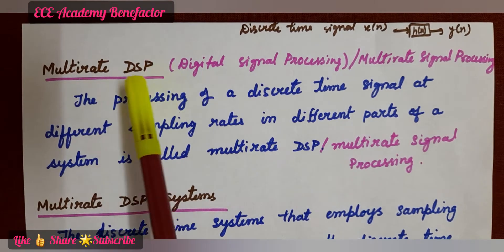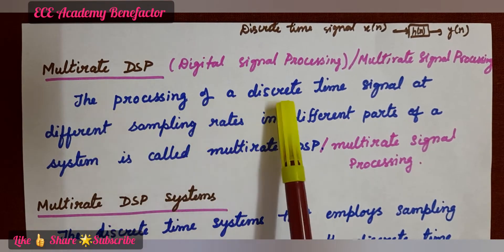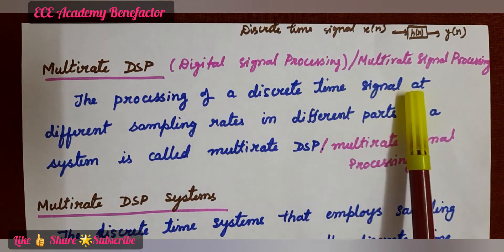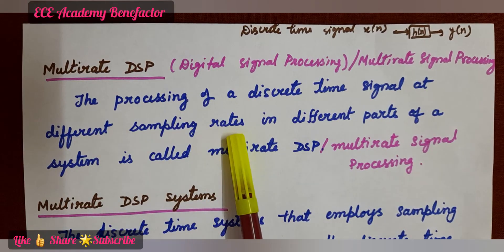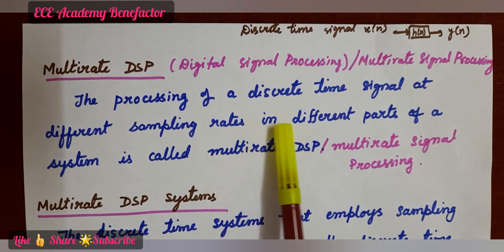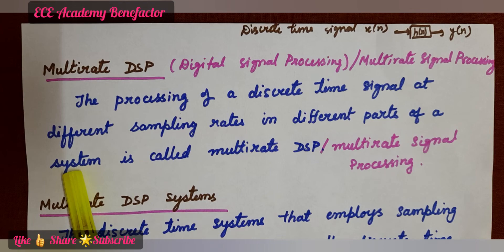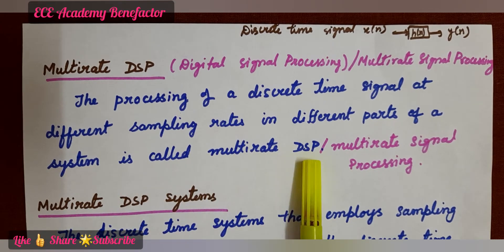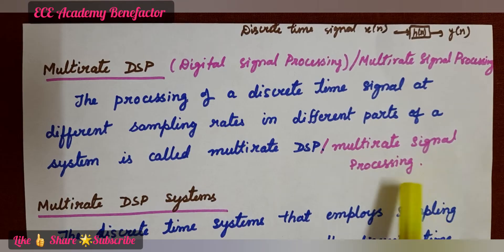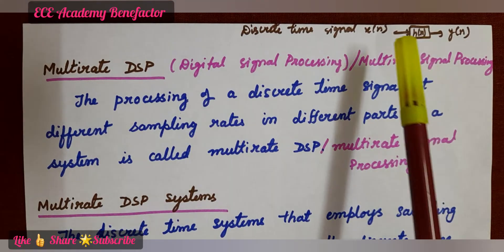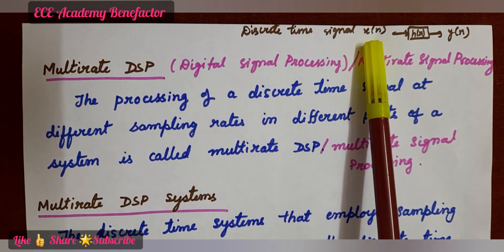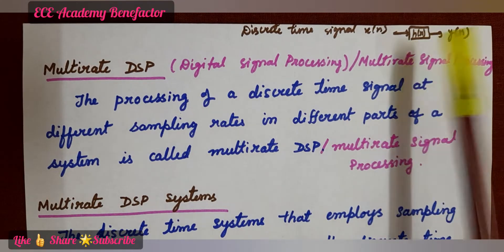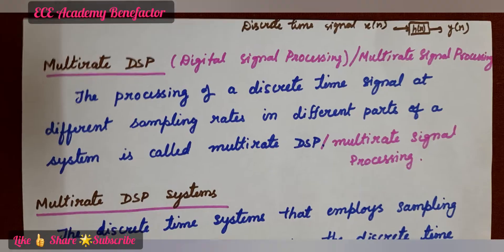So, what is multirate DSP? The processing of a discrete time signal at different sampling rates in different parts of a system is called multirate digital signal processing or multirate signal processing.